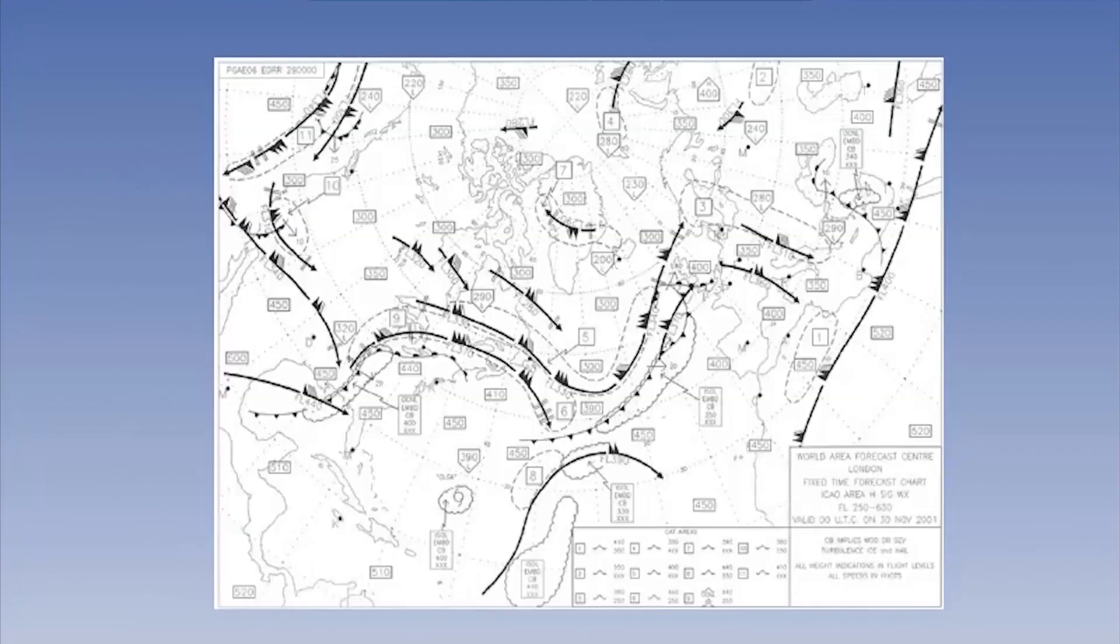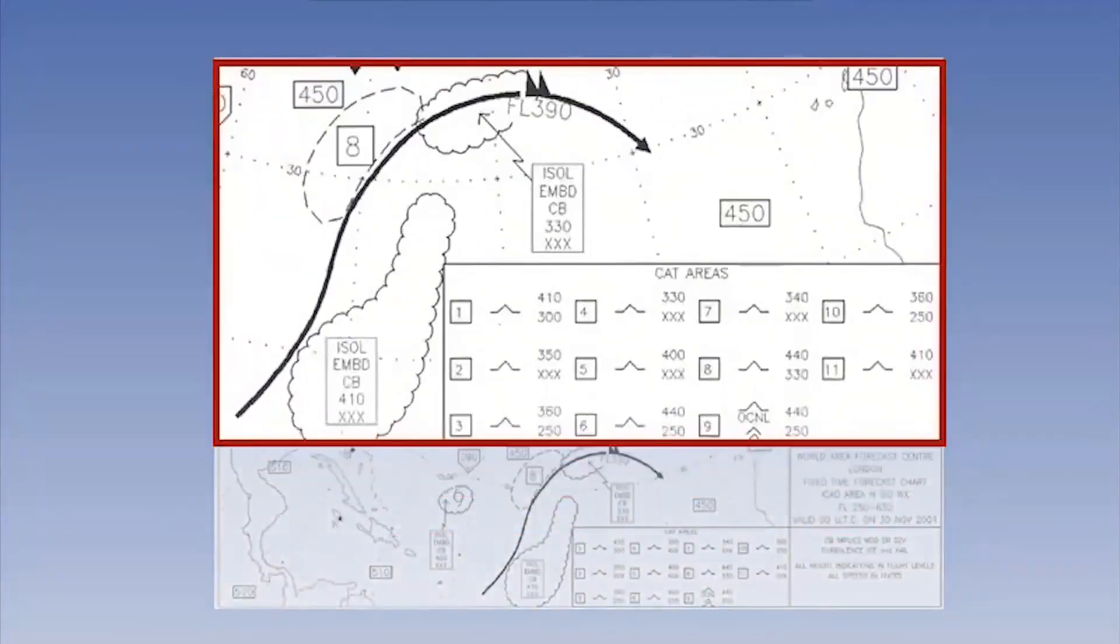These areas are very important to aircraft operating at high altitudes and as such are shown on significant weather charts issued to aircraft operators. This is an example of a chart showing a CAT area surrounding a jet stream.